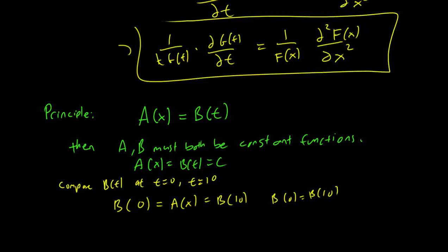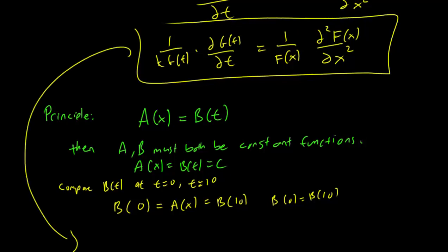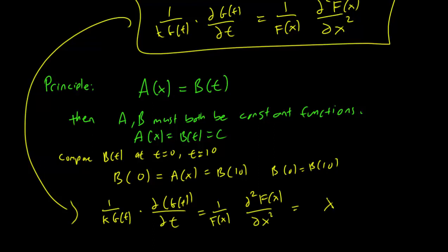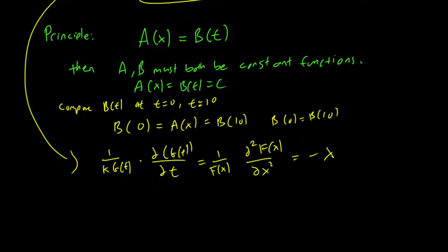What this means for us is that from here, using that principle, we have that 1/(kG(t)) times ∂G(t)/∂t and 1/F(x) ∂²F(x)/∂x² must both equal to a constant lambda. Now let's call it minus lambda. The minus is there to make some of our calculations later on a bit easier. It's not really mathematically necessary.